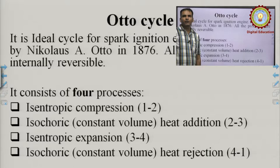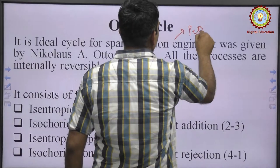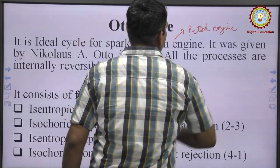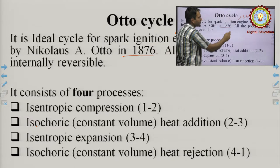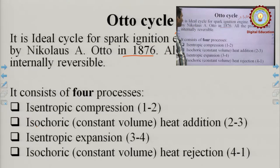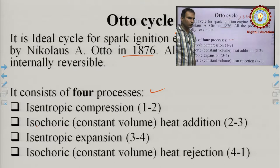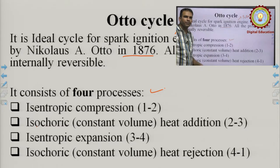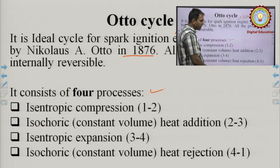The Otto cycle is basically used for spark ignition or petrol engines. This cycle was given by Nicholas A. Otto in 1876, and all processes are internally reversible. It consists of four processes: isentropic compression (1→2), isochoric heat addition at constant volume (2→3), isentropic expansion (3→4), and isochoric heat ejection at constant volume (4→1).